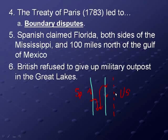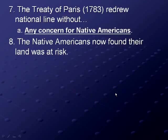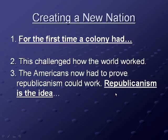The British also refused to give up their military outposts in the Great Lakes region. Additionally, the Treaty of Paris 1783 redrew national lines without any concern for Native Americans, effectively placing thousands of Native people under the control of a new government with no say in the matter, and putting their lands at risk.